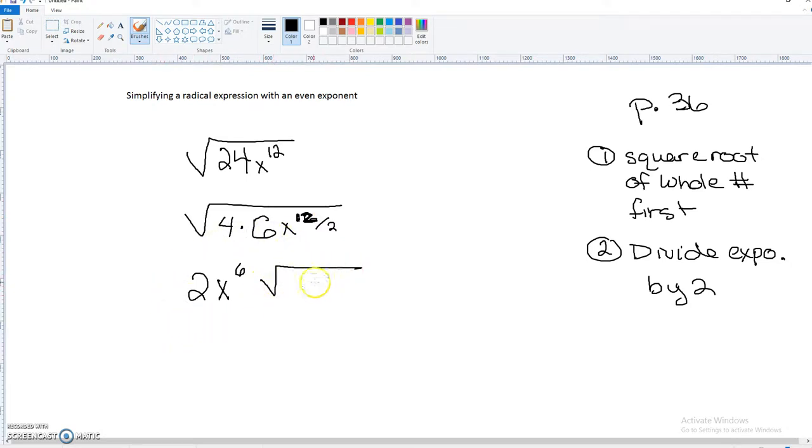So then the only thing that's left underneath the radical is just the 6, because this came out, and of course this came out when we divided by 2.